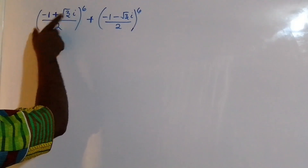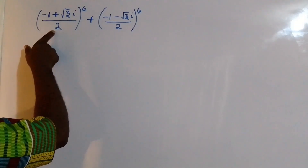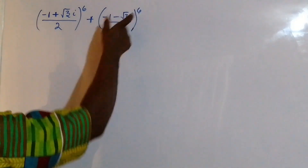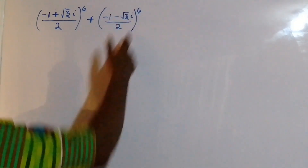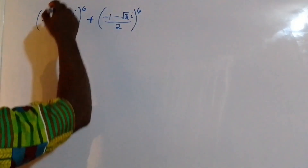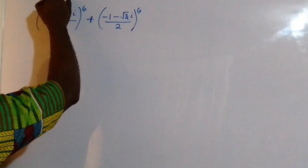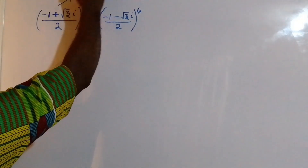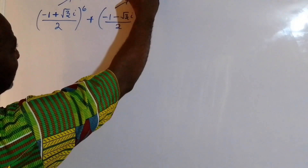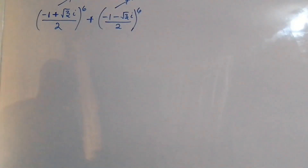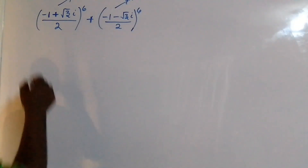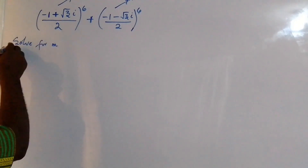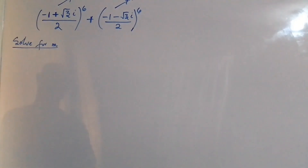We have (-1 + √3i)/2 to the power of 6, plus (-1 - √3i)/2 to the power of 6. The approach I'm going to use is to take the whole of the first expression as m, and the whole of the second as n. Then I'm going to solve for m first.